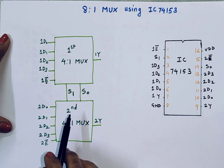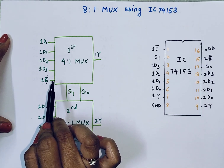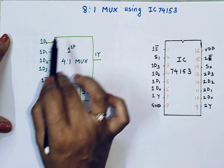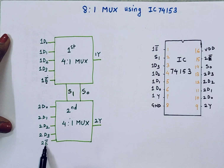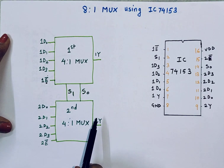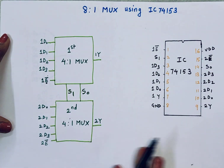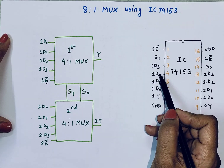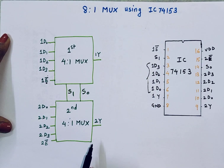E-bar stands for enable — it is an active low input, meaning if this pin receives 0, only then the MUX will turn on and produce output. There is also 2E-bar, which is the enable input to the second 4-to-1 multiplexer. In total, IC 74153 has 4 plus 4 = 8 data inputs.